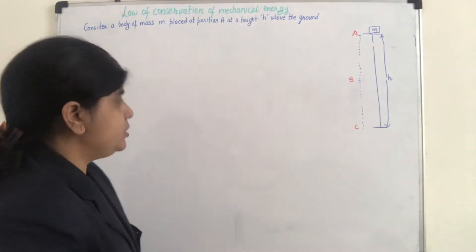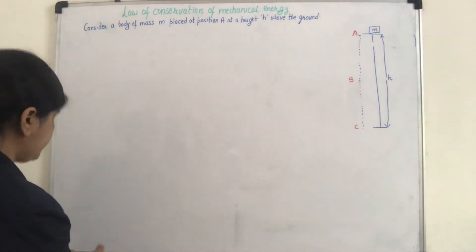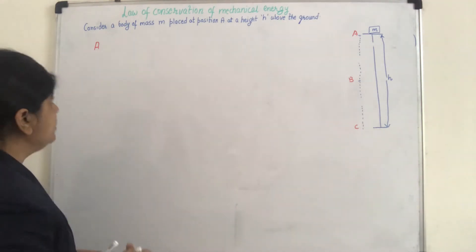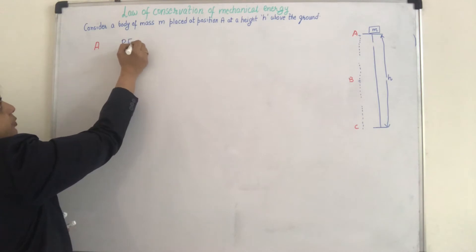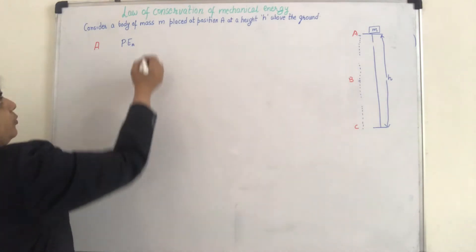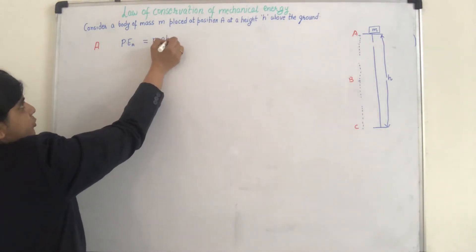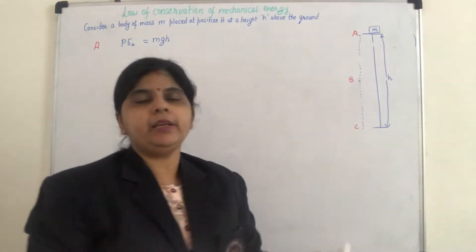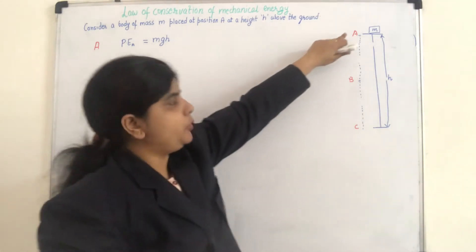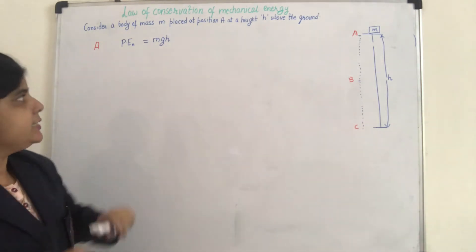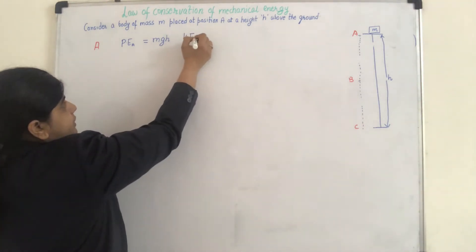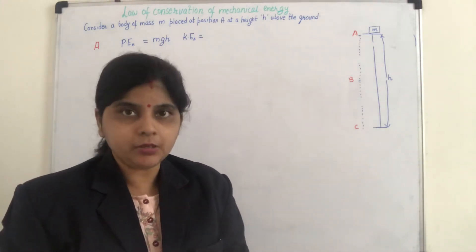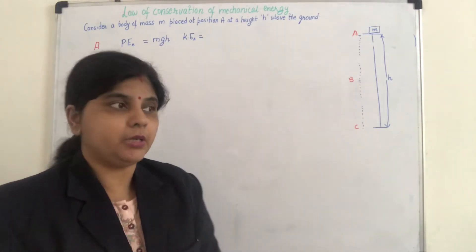Let me start with point A. We are assuming an object of mass M kept at a height H from the ground. At point A, what is the potential energy? The formula for potential energy is M×G×H. The body is of mass M, at height H, and gravity is G. So potential energy at point A is MGH. Simultaneously, what is the kinetic energy at point A? At this point the body is at rest, so velocity is 0.